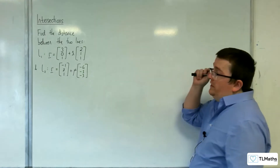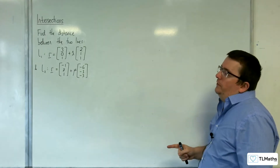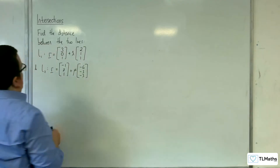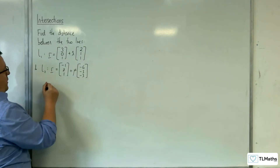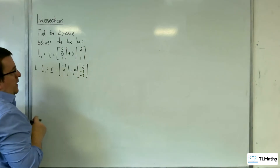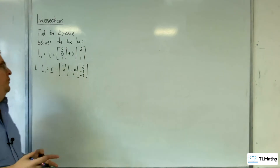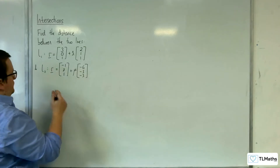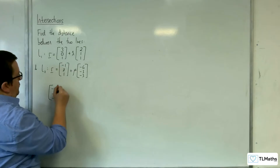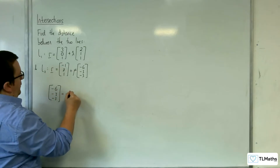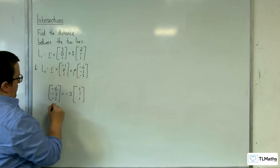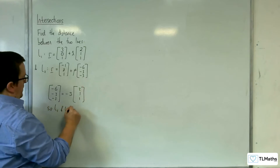In this video we're going to be looking at finding the distance between two lines. The important thing to notice is that they are parallel, because the direction vectors 2, 1, 1 and minus 6, minus 3, minus 3 are scalar multiples of one another — minus 6, minus 3, minus 3 equals minus 3 times 2, 1, 1. So L1 and L2 are parallel.